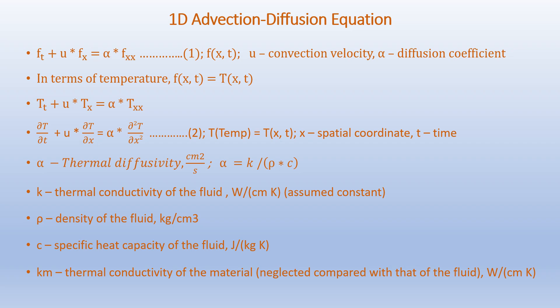If we consider F as temperature, we can write the equation as T_t plus u times T_x equals alpha times T_xx, or in partial derivative notation: dT/dt plus u times dT/dx equals alpha times d²T/dx². Here the uppercase T is the temperature, which is a function of spatial coordinate x and time t, and alpha is the thermal diffusivity of the fluid in centimeter squared per second, where alpha equals k over rho c.